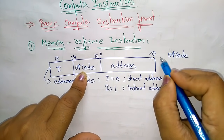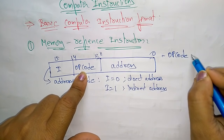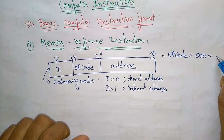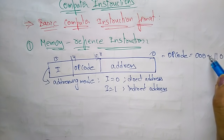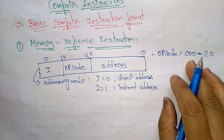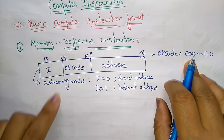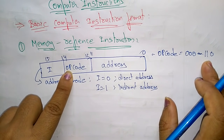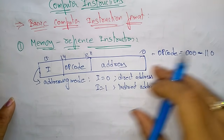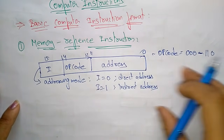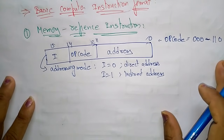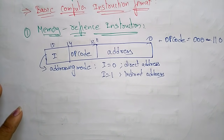The opcode range is from 000 up to 110 — that is, zero through six. These opcodes are stored in bits 12 to 14 for memory reference instructions.